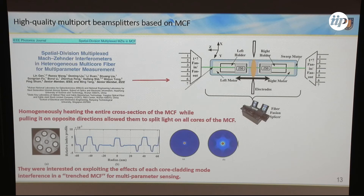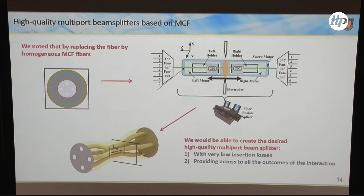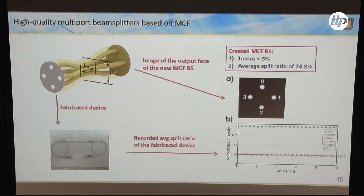What we thought is: let's go back to a homogeneous multicore fiber, do the tapering, and the cores will start to get close together so light will couple from one core to another. Now you have what I'm looking for — a multiport beam splitter. This can be done very comfortably: I throw light through one of the cores, do the tapering while monitoring the light output, and keep tapering until the light is balanced at the output. The overall loss is really small because there is no junction in the fiber path. At the end, you can build a very nice beam splitter with average split height close to a perfect beam splitter.